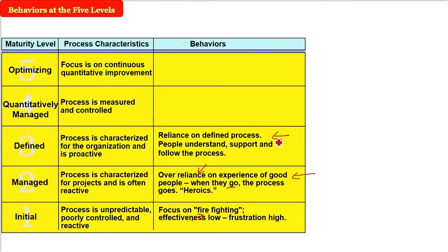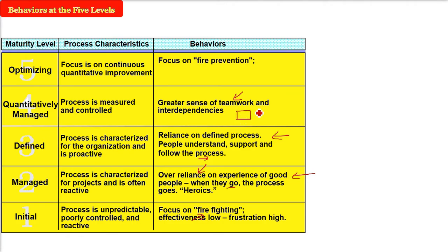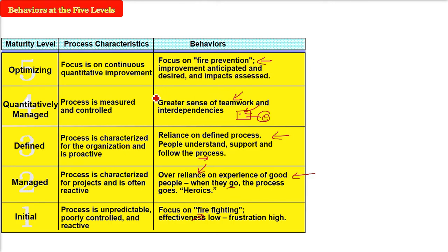At level three (Defined), reliance is not on people but on defined processes — everyone understands, supports, and follows them because rules, standards, and procedures are written down. At level four (Quantitatively Managed), people have a greater sense of teamwork and interdependency. At level five (Optimizing), the focus is on fire prevention — problems are anticipated before they occur, and impacts are assessed, monitored, tracked, and controlled.